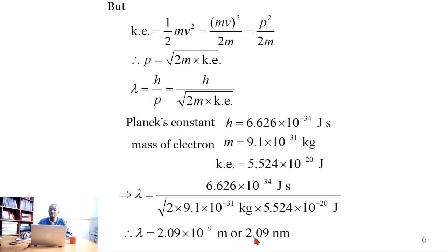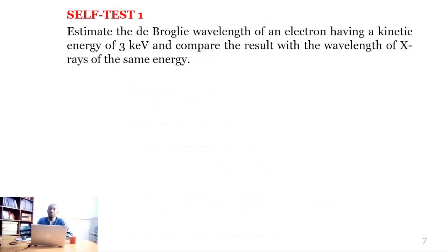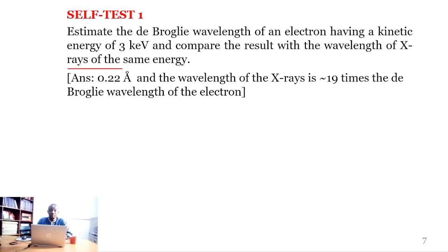We can write this as 2.09 nanometers. Here is a self-test question to find out if you understood how to solve the first question: estimate the de Broglie wavelength of an electron having a kinetic energy of 3 kilo-electron volts, and compare the result with the wavelength of X-rays of the same energy. The answers are: the de Broglie wavelength is 0.22 ångströms, and the wavelength of X-rays is about 19 times the de Broglie wavelength of the electron.